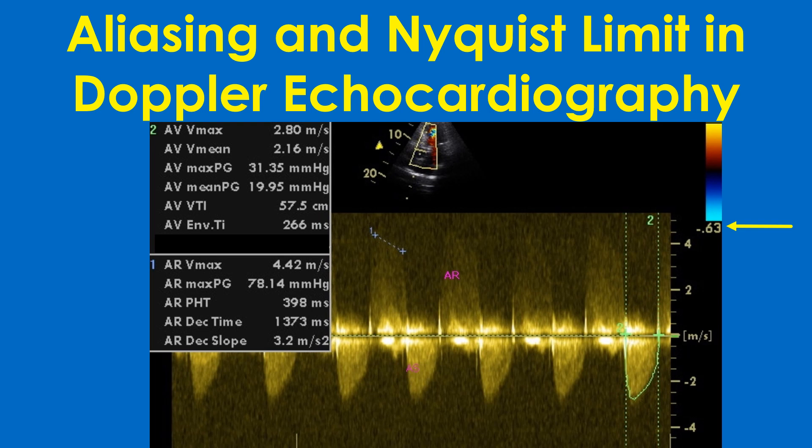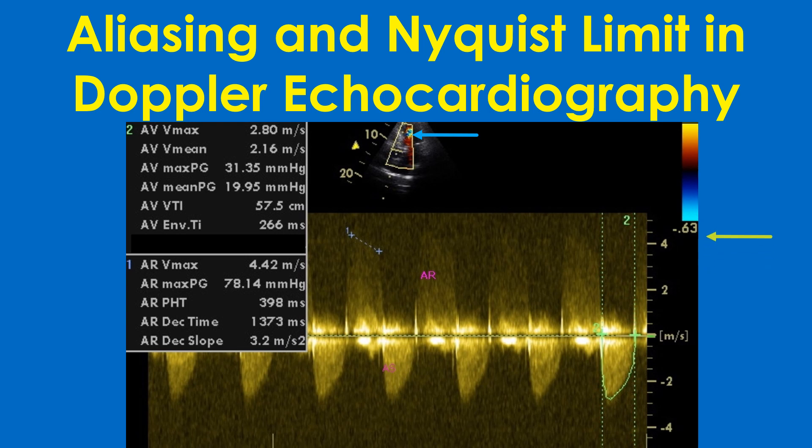In the image shown here, the Nyquist limit for HPRF is about 5 m per second in both directions, so the aortic regurgitation jet with a peak velocity of 4.42 m per second is seen to its full extent above the baseline. In the same image, the Nyquist limit of the color Doppler is only 63 cm per second; hence the color AR jet is seen as a mosaic jet in the inset. Multiple colors represent variance in velocity across regions due to jet turbulence, as displayed in the color bar on the top right corner.